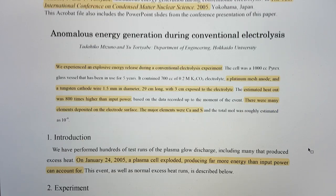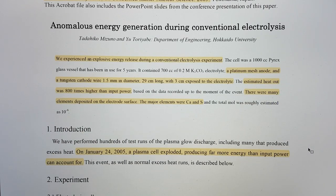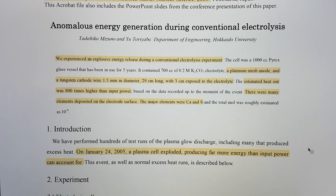The title is Anomalous Energy Generation During Conventional Electrolysis. They experienced an explosive energy release using a platinum mesh anode and tungsten cathode wire 1.5 millimeter in diameter, 29 centimeters long with three centimeters exposed to electrolyte. Estimated heat out was 800 times higher than input power. There were many elements deposited on the electrode surface, the major elements were calcium and sulfur.